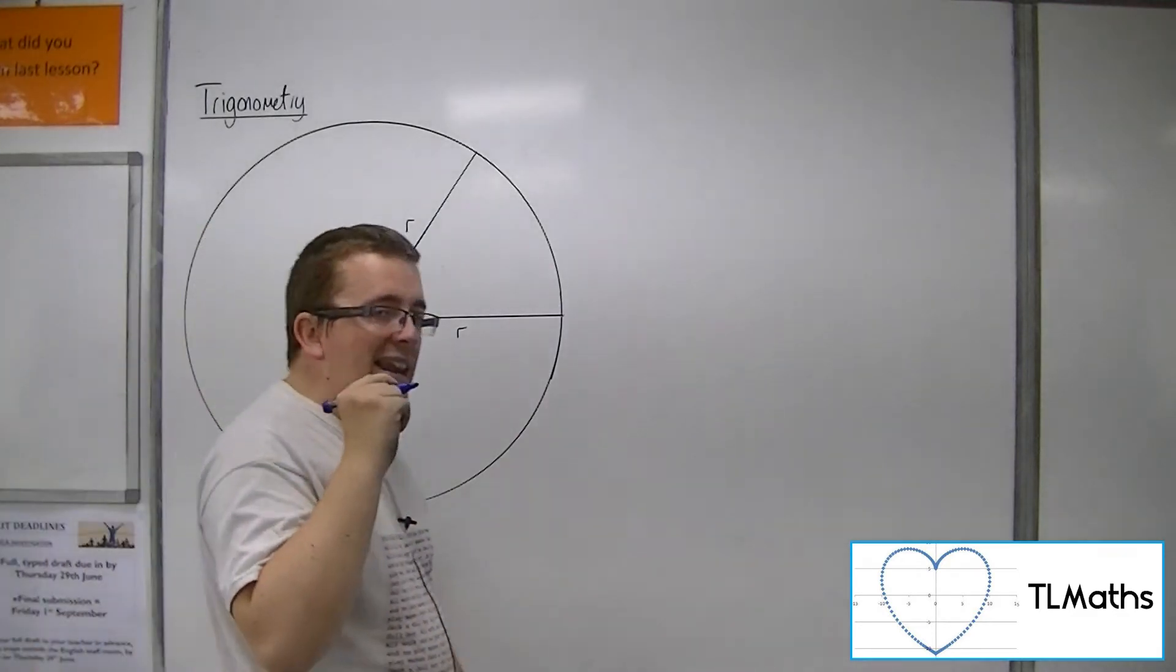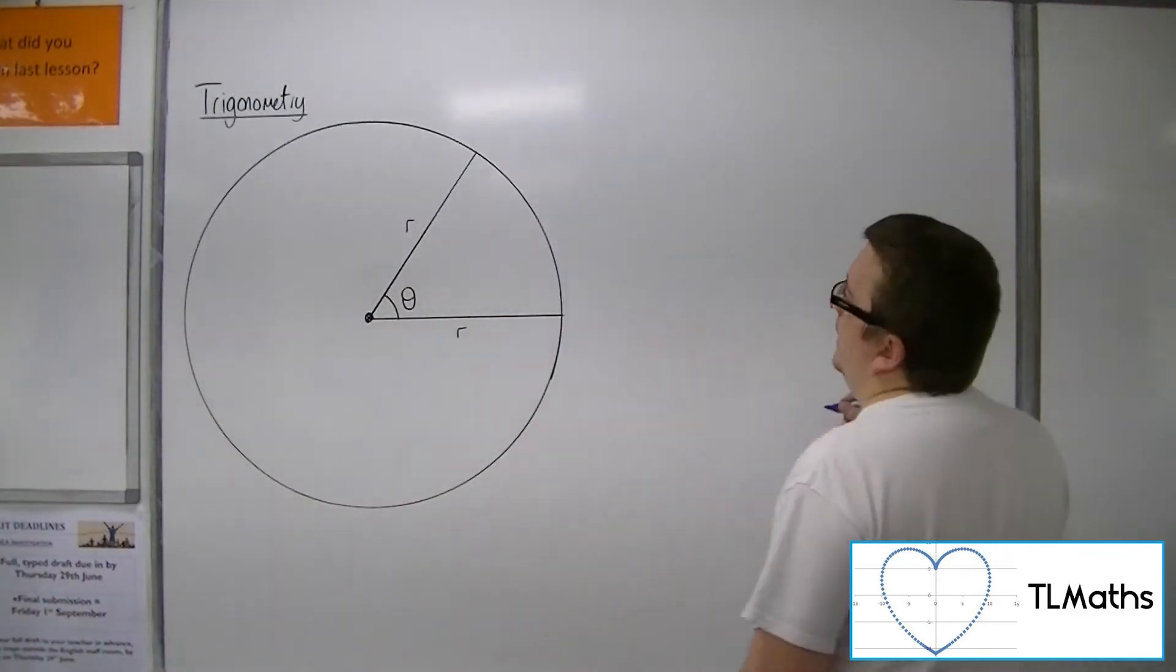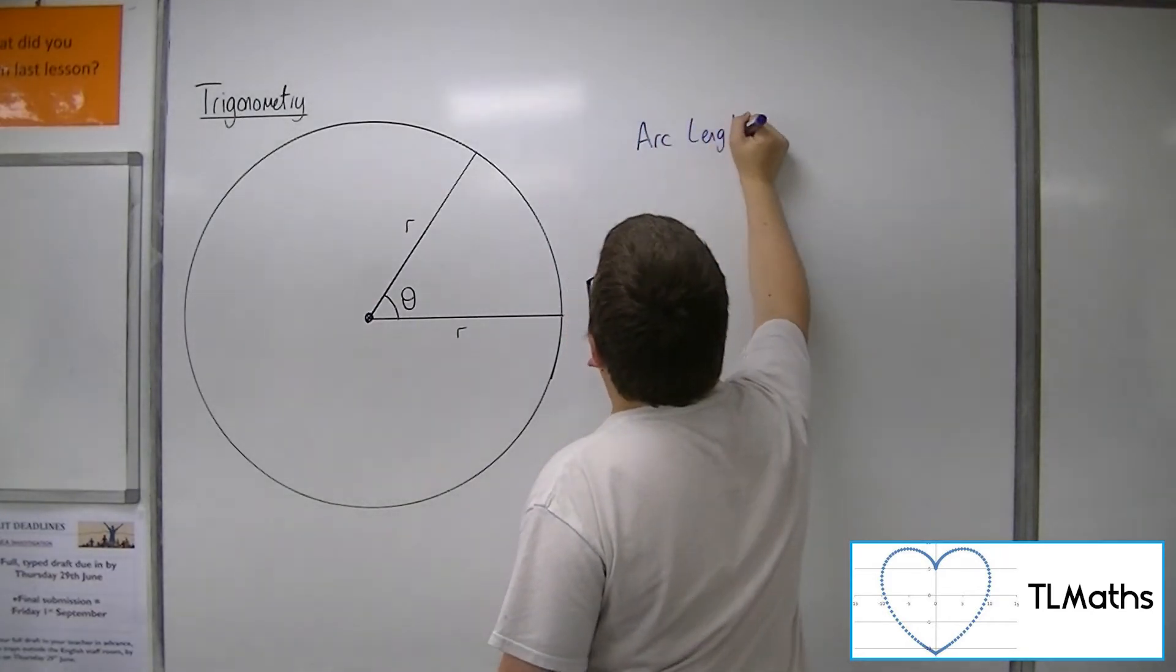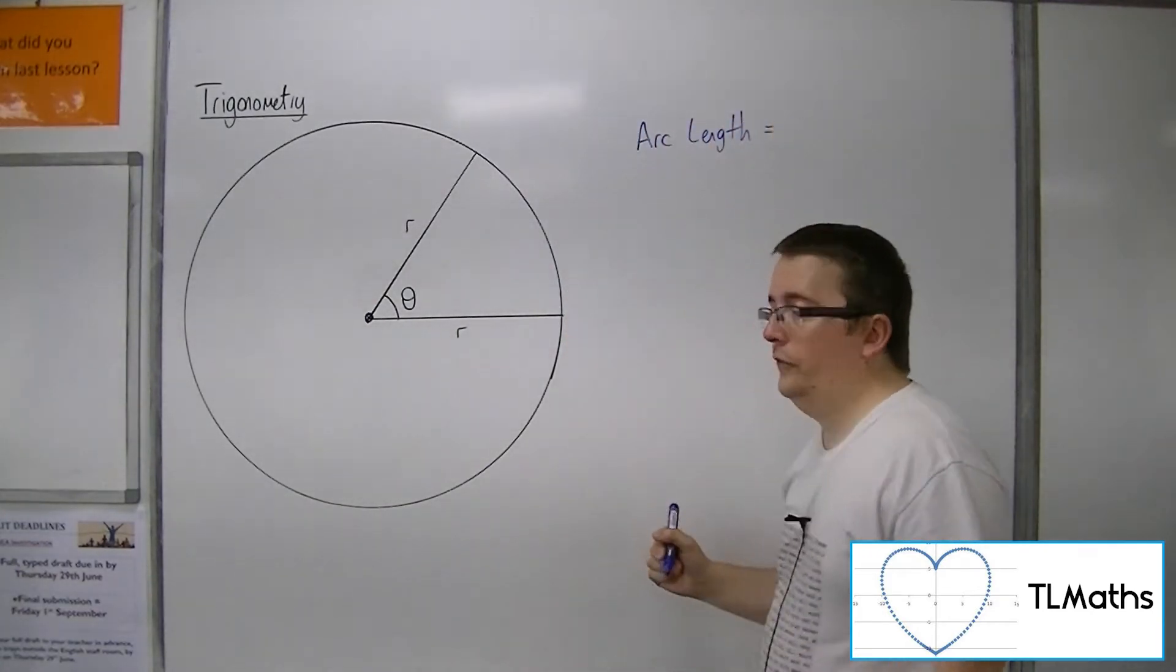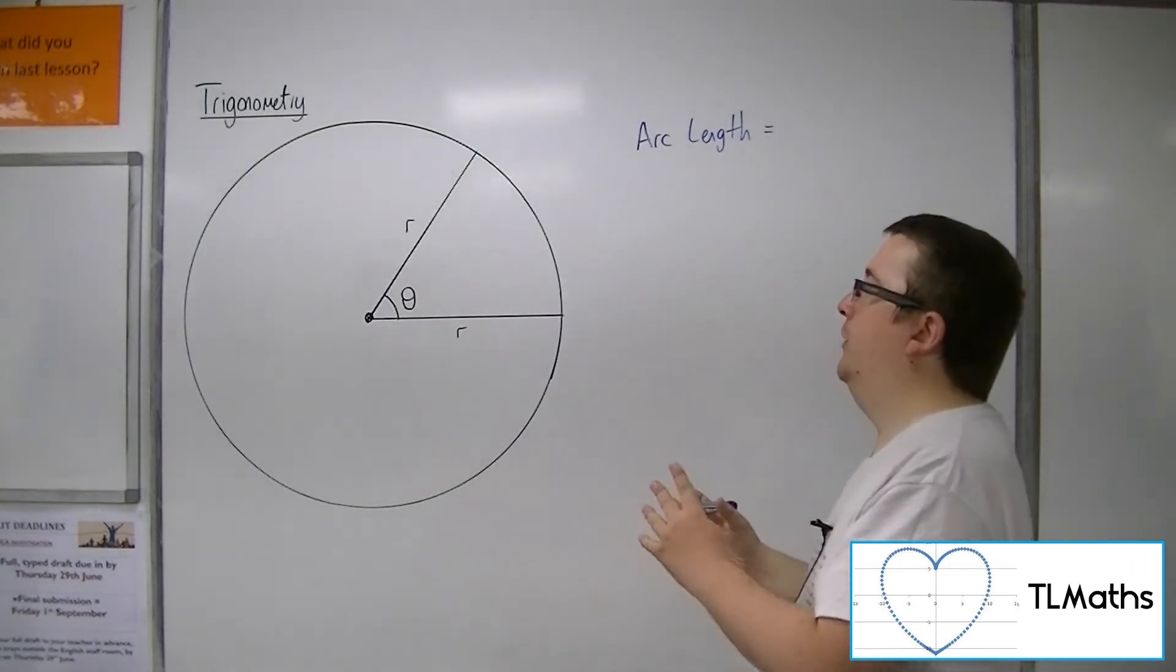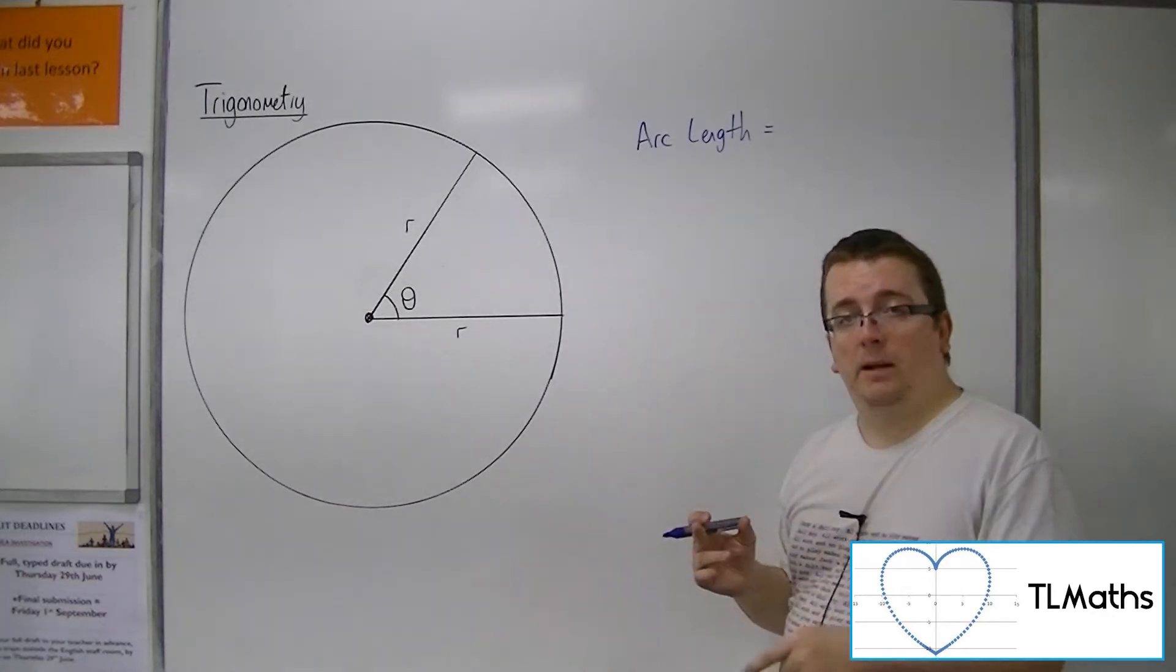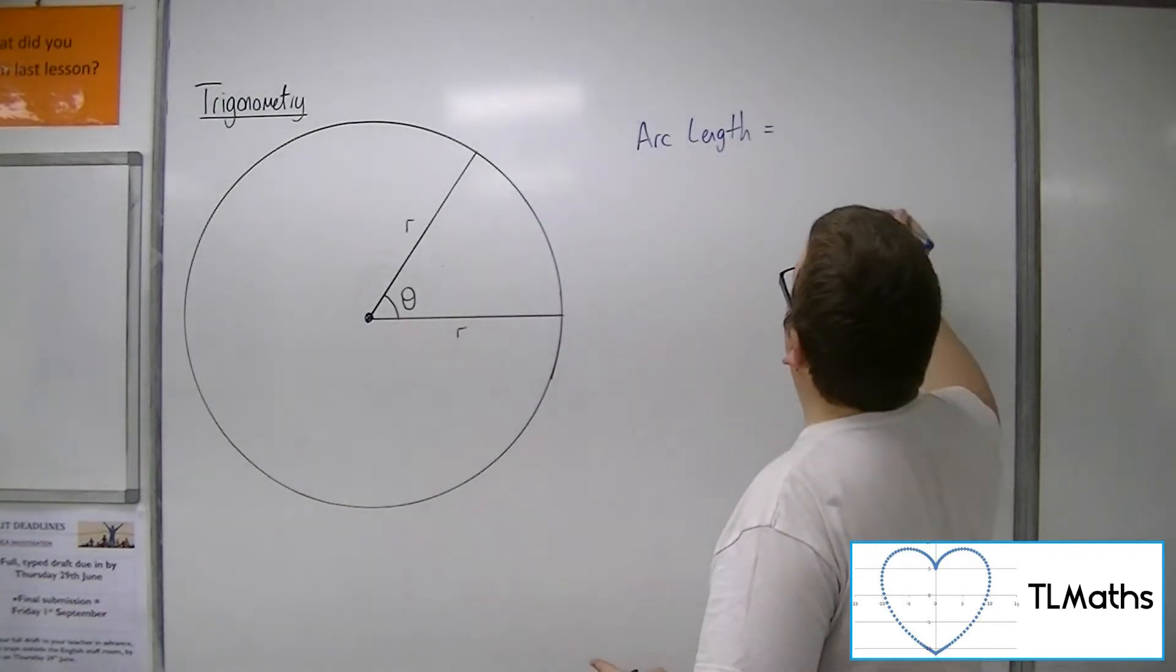So that length I could calculate as being a section of this whole circle circumference. So a fraction of the circle circumference. Now I know that the circle circumference is 2πr.